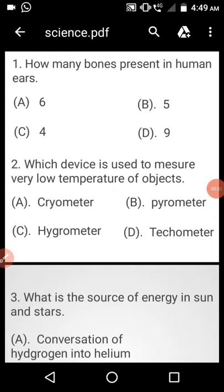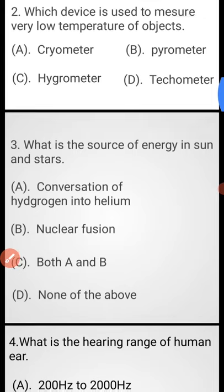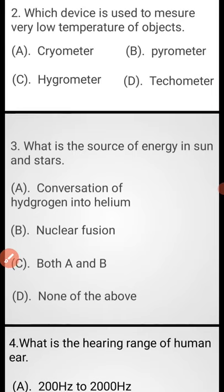Hello friends, today I will learn 10 GK questions for science. Question number 1: How many bones present in human ear? Option A: 6, Option B: 5, Option C: 4, Option D: 9. Answer is Option A.